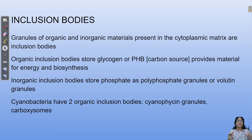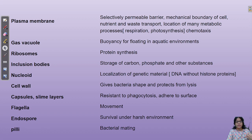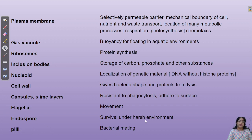The cell organelles in the cytoplasm of prokaryotic cells have now been covered — including cell wall structure, mesosomes, ribosomes for protein synthesis, inclusion bodies, and the nucleoid. Flagella are meant for locomotion. Endospores are produced by some bacteria like Clostridium to survive harsh environments. Sex pili are meant for bacterial mating.